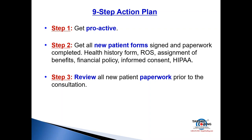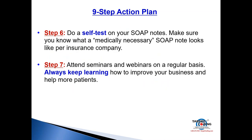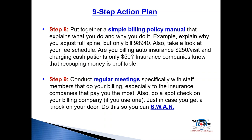Step four: review the policies from the insurance companies you bill the most. Step five: understand what and why — your CPT codes are what you're doing, and your diagnosis codes are why you're doing them. They have to pair and match. If you're billing 97110 and don't show any range of motion deficits, you're not pairing properly. Step six: do a self-test on your SOAP notes. Step seven: always keep learning — attend seminars and webinars regularly to help more patients, improve your business, and become more profitable.